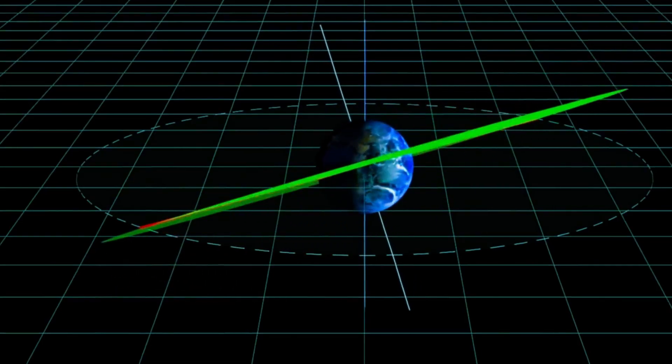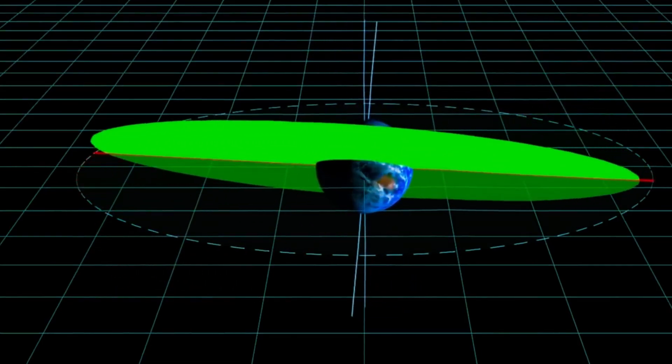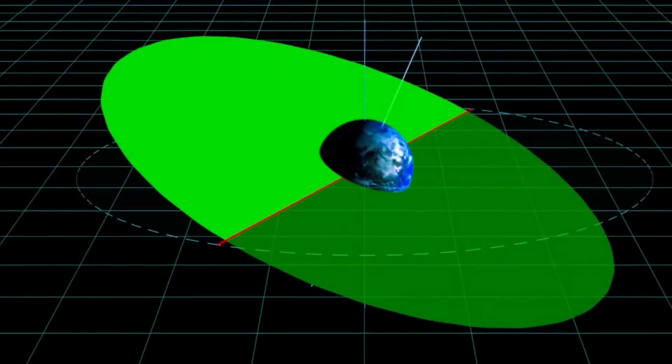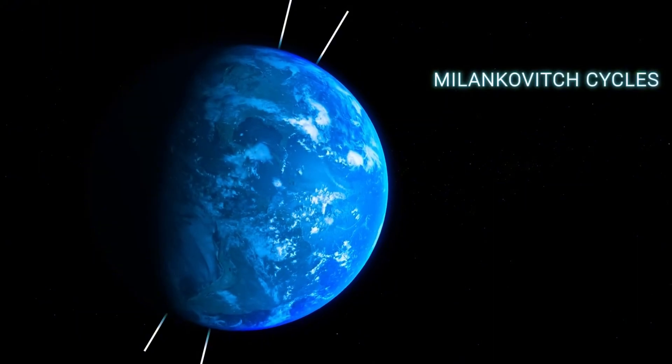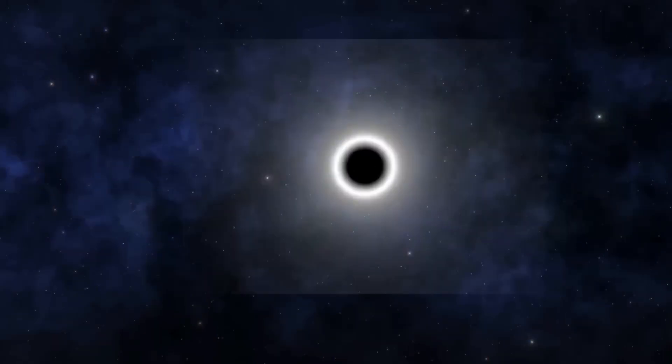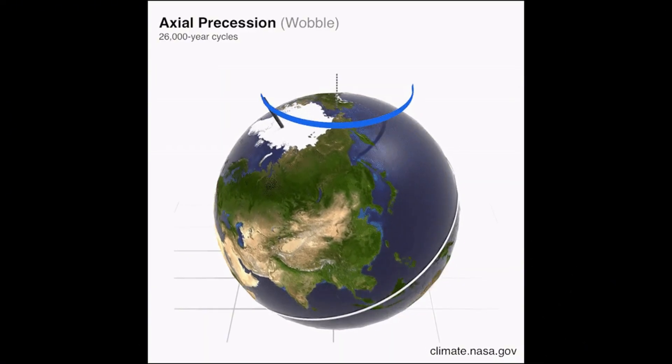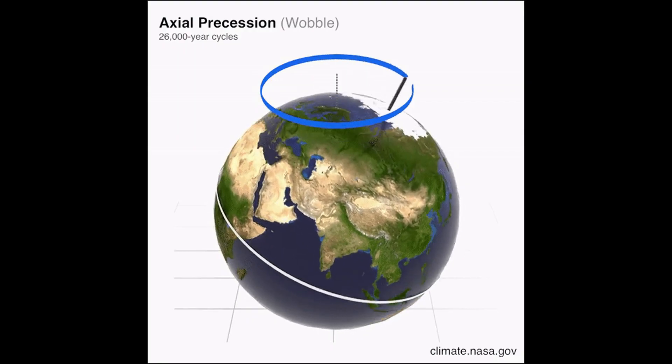Add in the precession of the equinoxes and changes in orbital eccentricity, and you get the climate metronome known as the Milankovitch cycles, named after Milutin Milankovitch, linking orbital mechanics to alternating glacial and interglacial periods across deep time.